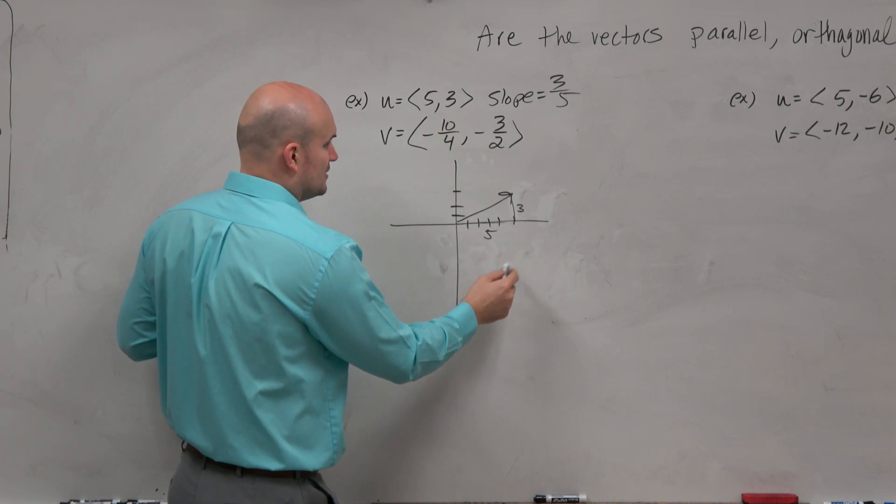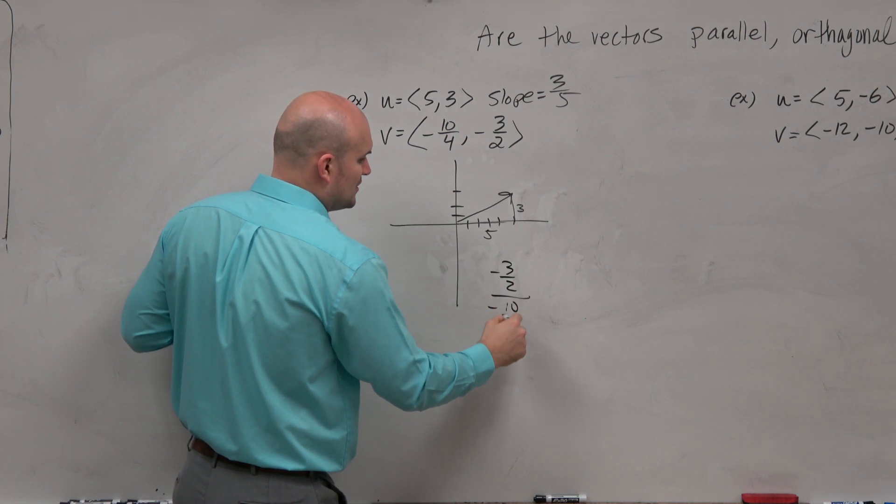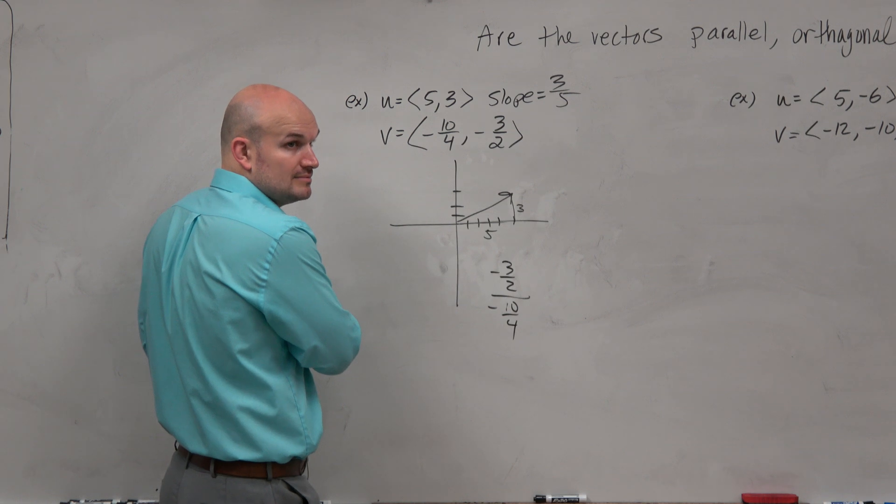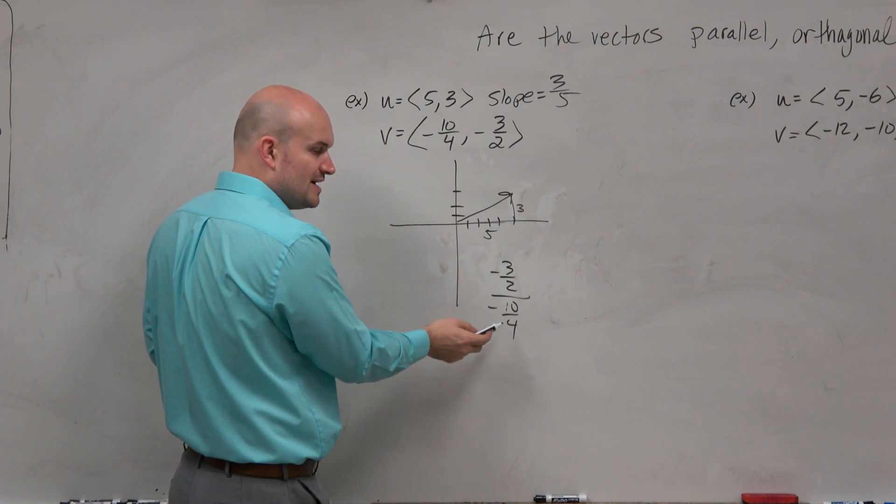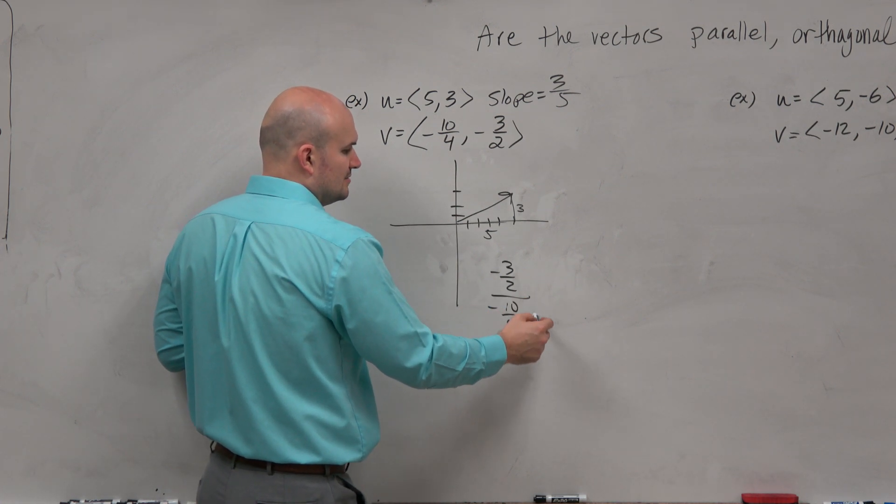So could I just do opposite? Could I just take the negative 3 halves, divide it by negative 10 fourths, and see if that gives me a 3 fifths? Right? So all I need to do then is just to have a fraction divided by another fraction, I can just multiply by the reciprocal.